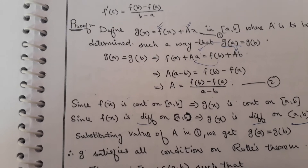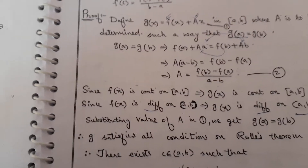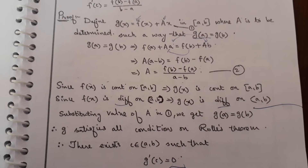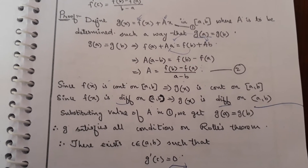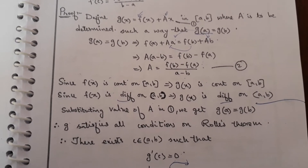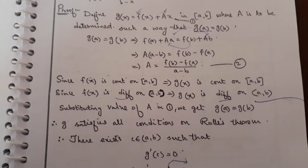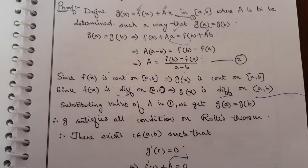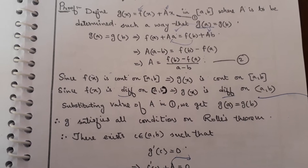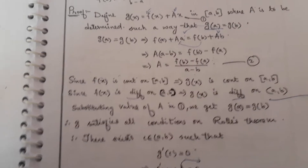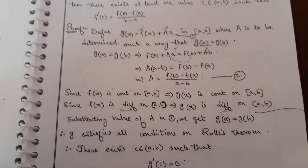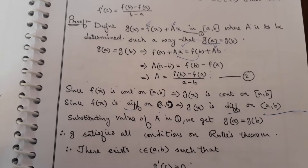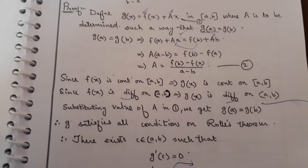Proof. Define g(x) = f(x) + Ax on closed interval [a, b], where A is to be determined such that g(a) = g(b). Setting g(a) = g(b): f(a) + Aa = f(b) + Ab. Rearranging and taking A as common: A = [f(b) - f(a)] / (a - b). Take this as equation two.